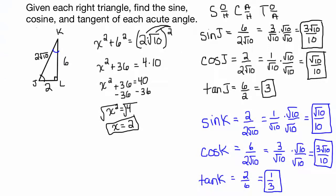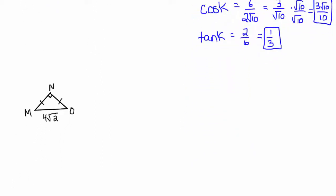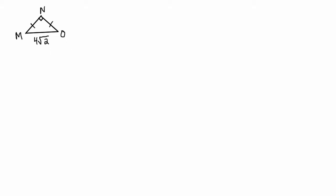I have another one for us to do. We have another right triangle, MNO. There are two hash marks showing those two sides have the same measure — they're congruent — and the hypotenuse is 4 root 2. We can't find the trig ratios unless we know all the sides. So we call side NO x, and because it has the same measure as side MN, we call that x as well, and use the Pythagorean theorem to solve for x.